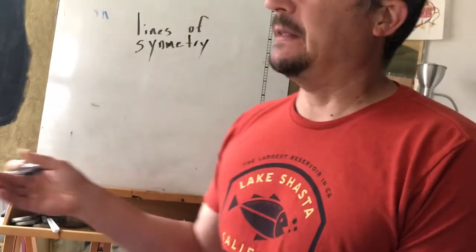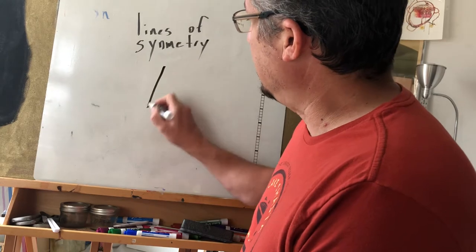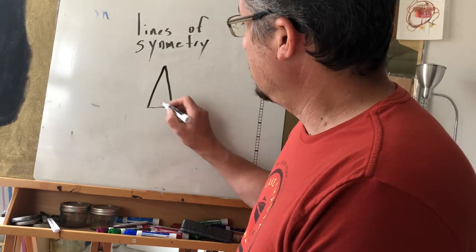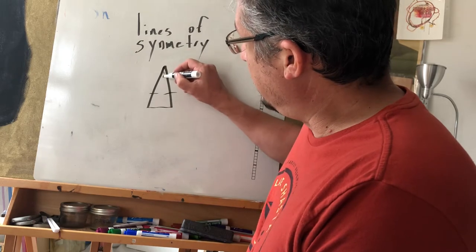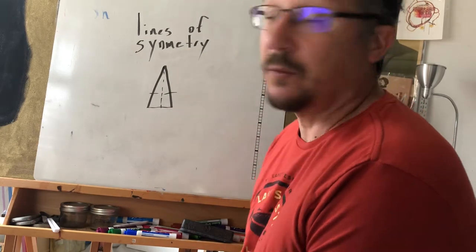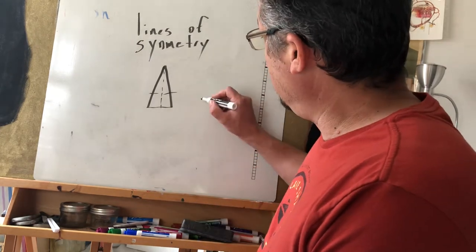So an isosceles has two congruent sides and yeah, we can fold it and it will have two equal sides.